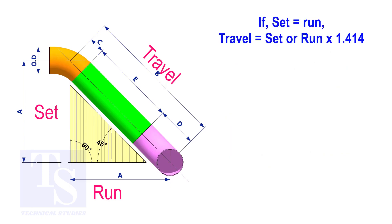Assume that the value of the set is 100. The value of the travel is 100 multiplied by 1.414 equals 141.4.